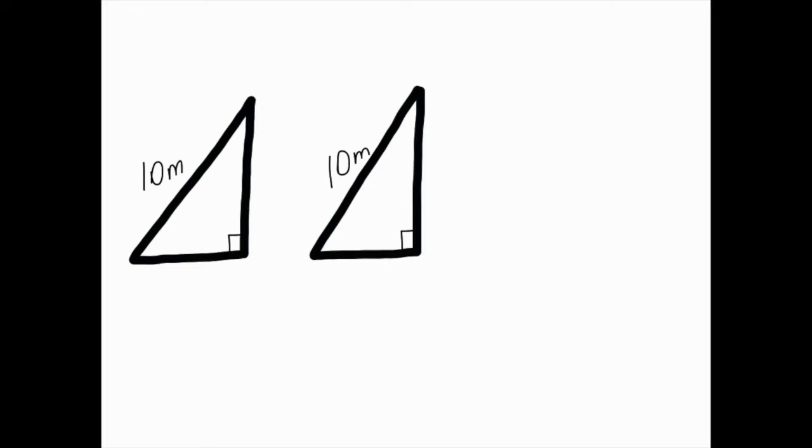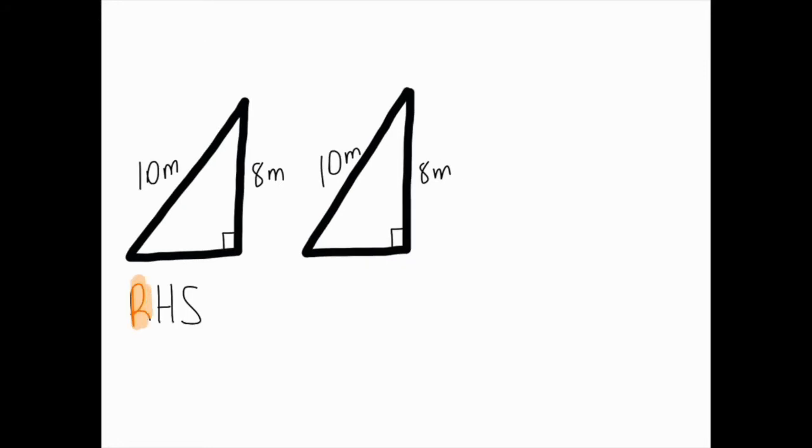This right angle triangle is showing us that we have a hypotenuse of 10 meters and a shorter side of 8 meters. I can see straight away that I have that right angle. I'm going to color that in orange. My hypotenuse I'm going to color in blue and my shorter side I'm going to color in green.